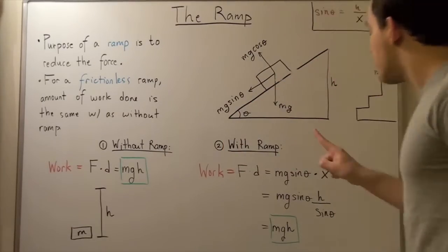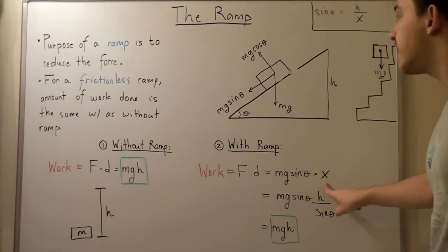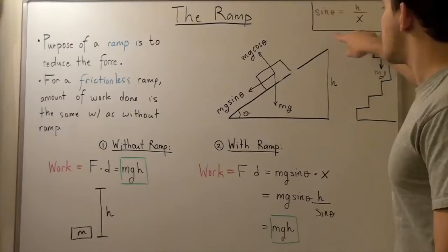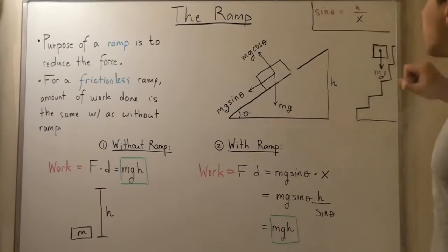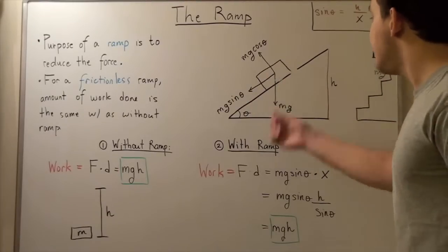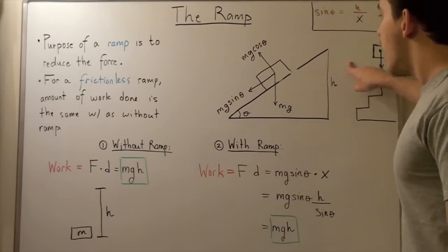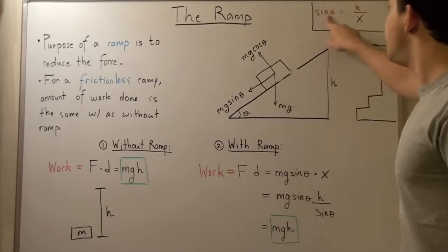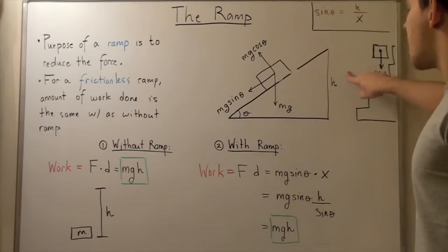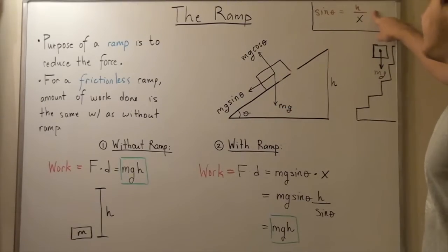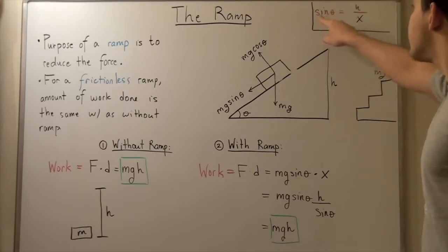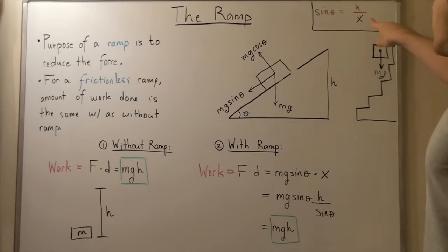So now let's remember how else we can represent x. Remember, x is our hypotenuse, this distance here. And remember that sine of the angle is equal to opposite over hypotenuse. So that means sine theta equals h, which is opposite, over x. And if we want to represent x in terms of sine theta and h, we can do just that. So let's bring x on this side, and let's bring sine on this side. We see that x equals h divided by sine theta.